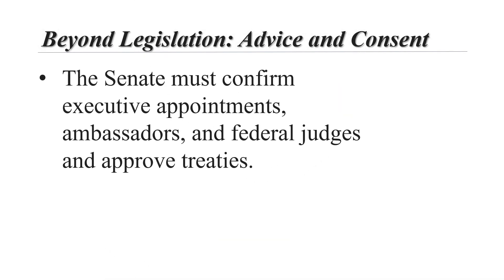Oversight also falls under its advice and consent powers. The Senate must confirm executive appointments. They must confirm ambassadors and federal judges and Supreme Court judges and treaties. For a treaty to be approved by the Senate, two thirds of them must be present and vote to approve it. For appointments, a simple majority is required. The Senate only occasionally exercises its power to reject treaties and appointments.